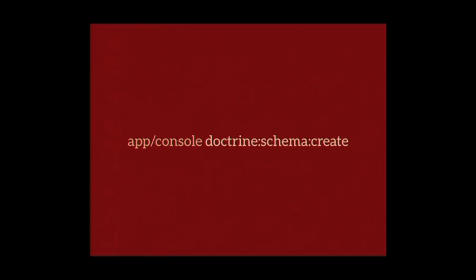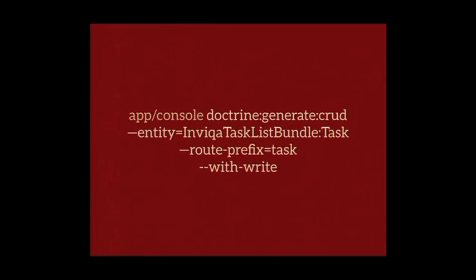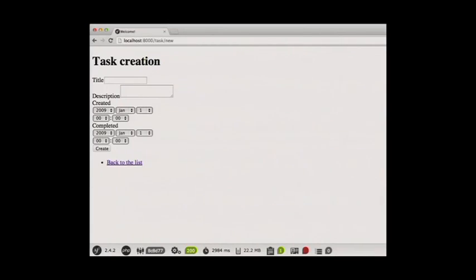While we're at it, we can use the console command generate:doctrine:crud to generate a controller, a form class, and templates for basic CRUD operations — creating a task, updating a task, viewing a collection, and viewing individual tasks. We set a route prefix of 'task' so everything is accessed at /task/something. With the --with-write option we get create and update actions too. Once done, we can go to /task/new in the browser and see a form with title, description, created, and completed fields.